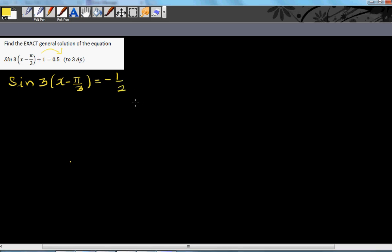So I want to write this as sine of something. This is sine 3 times x minus pi by 3 is equal to sine of what? So this is equal to sine inverse.